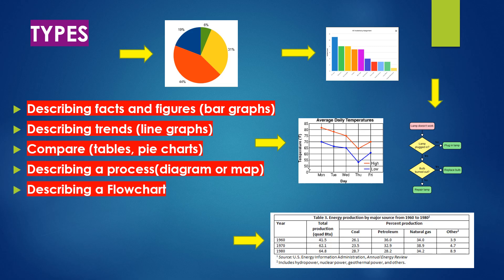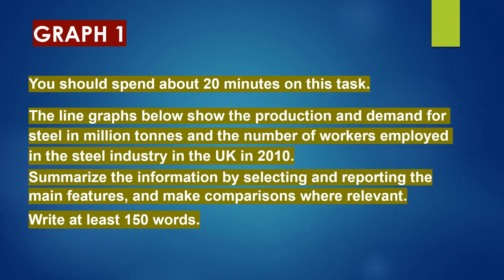Let's take a look at graph 1. You should spend about 20 minutes on this task. The line graphs below show the production and demand for steel in million tons and the number of workers employed in the steel industry in the UK in 2010. Summarize the information by selecting and reporting the main features and make comparisons where relevant. Write at least 150 words.